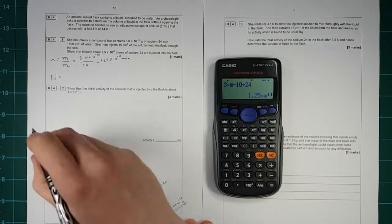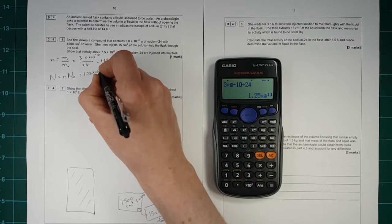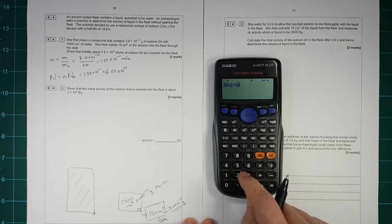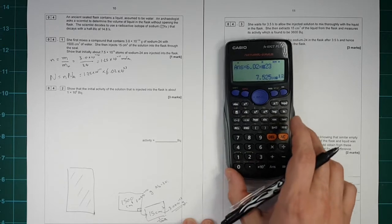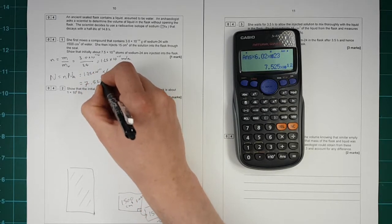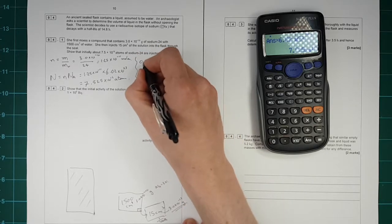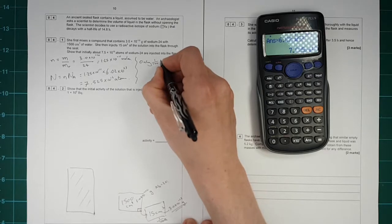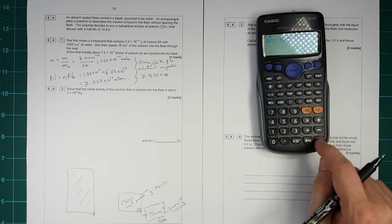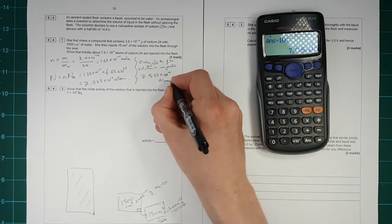So N is going to equal the number of moles times by Avogadro's number. So that's equal to 1.25 times 10 to the minus 11 times by Avogadro's number, 6.02 times 10 to the 23. That's on your datasheet. So times by 6.02 times 10 to the 23. And you get this, which you'll notice is 100 times bigger than the answer that you're after. So that's 7.525 times 10 to the 12 atoms. And then we need to divide by 100. But only 100th of the solution is injected. So divide this by 100. And we get 7.525 times 10 to the 10 atoms.